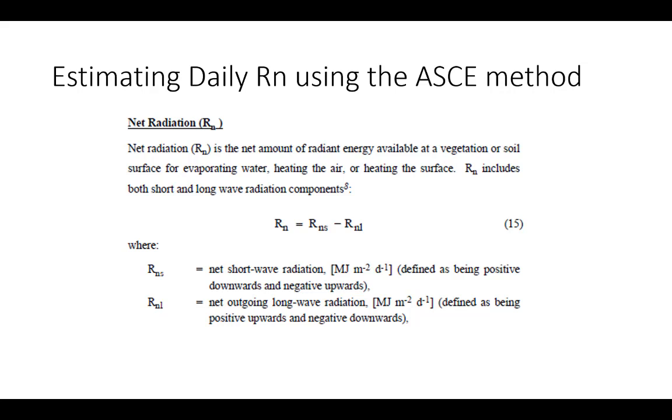If we look at the ASCE document and their recommended way for calculating daily net radiation, it looks like this. We've already studied net radiation, so you already have a good fundamental understanding of what it is. Net radiation is basically the difference between the net shortwave radiation in megajoules per meter squared per day minus the net longwave radiation, same units. Our goal is to get that RNS term and the RNL term on the right side of this equation. Once we have those, we're all set and ready to calculate daily net radiation.